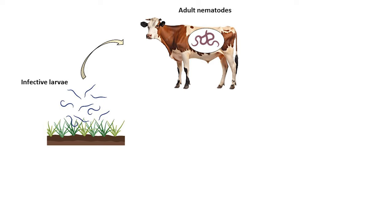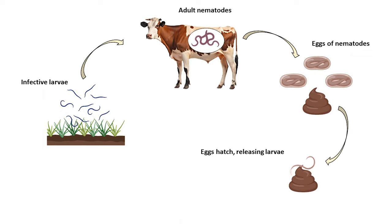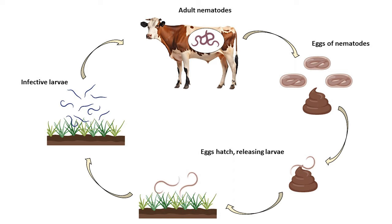Inside the host, the larvae mature into adult nematodes, leading to reproduction and egg release. The adult nematodes release eggs into the host intestine, which are then passed out in the animal feces. Under favorable conditions, the eggs hatch, releasing larvae, completing the cycle and starting the process anew.